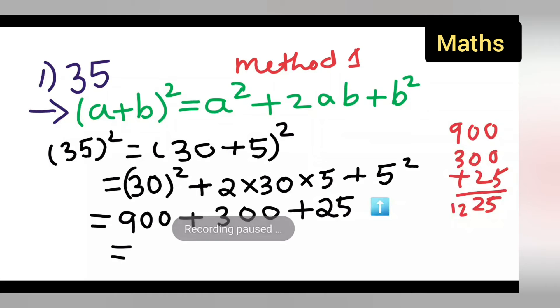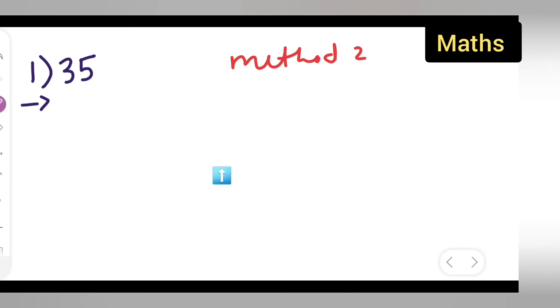So your answer is 1225. Next let us see one more method, that is method 2. What you are going to do is write down (30+5)² the same way, but here what will be the changes: (30+5)×(30+5). You're splitting it.